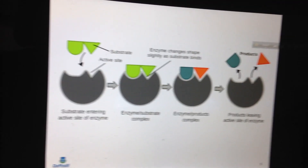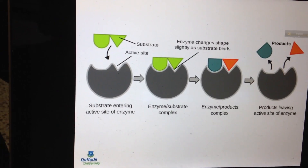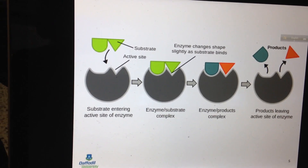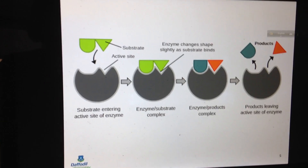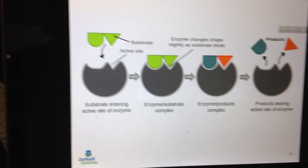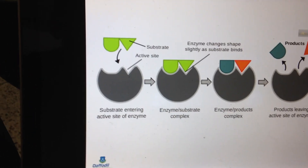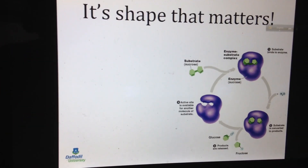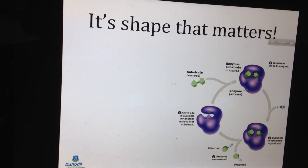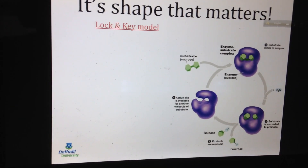After formation of the product, the enzyme releases the product. You can find one is our product and the other is the enzyme itself. This is the basic principle of enzyme catalysis, and by this way they follow the lock and key model, as this figure also explains.